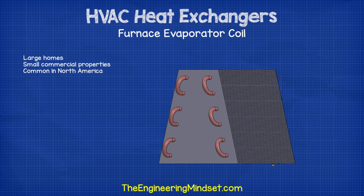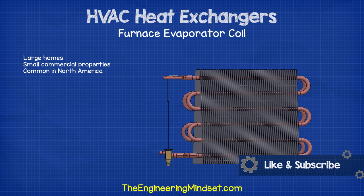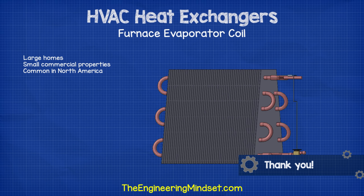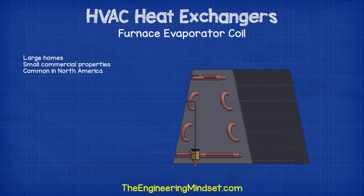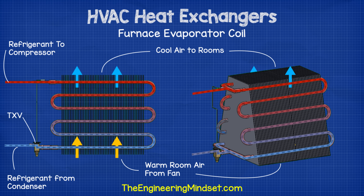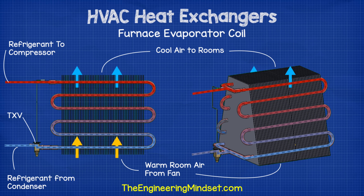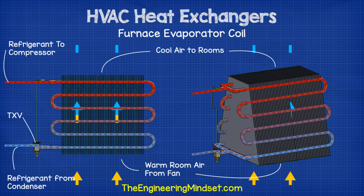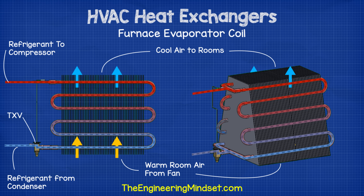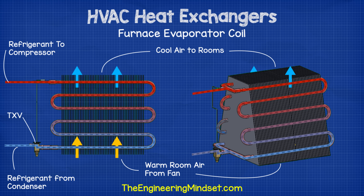Furnace evaporator coils are commonly found in large homes and small commercial properties with small ducted systems. The coil works the same as a thin tube heat exchanger, using refrigerant on the inside with ducted air on the outside. The air passes across the tubes and transfers its heat via forced convection, which is then transferred through the tube wall by conduction. The refrigerant on the inside carries this heat away through forced convection, then boils and evaporates away to the compressor.